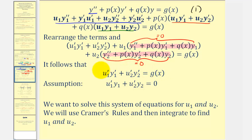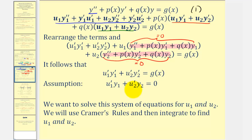We'll use this simplified equation together with our assumption to solve a system of two equations. We solve this system for u₁' and u₂' using Cramer's rule, and then integrate to find u₁ and u₂. Note that Cramer's rule first gives us u₁ prime and u₂ prime, so we still need to take antiderivatives to find u₁ and u₂.